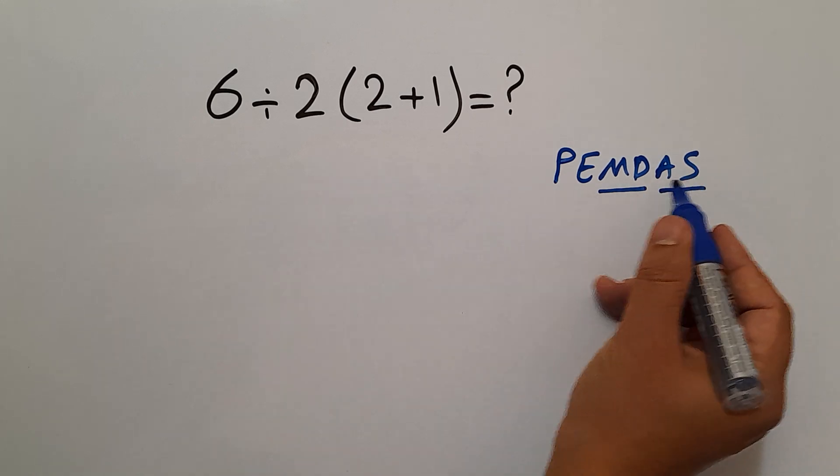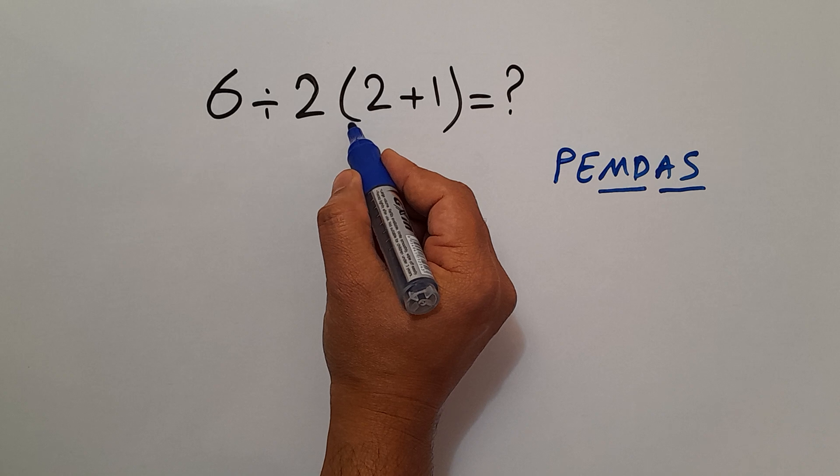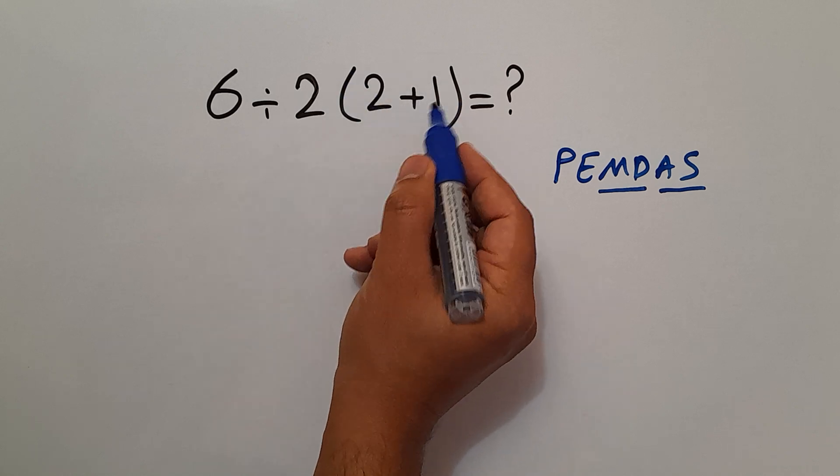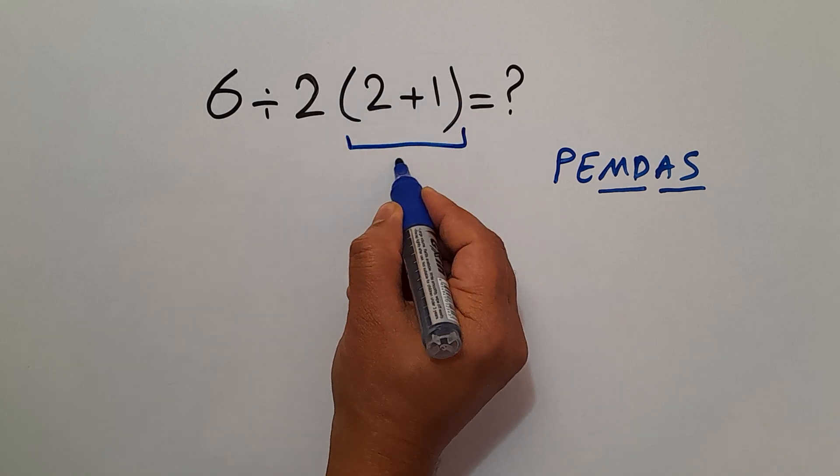So, according to this rule, here we first do these parentheses. 2 plus 1 gives us 3.